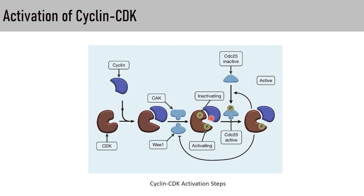This is the point where the cell decides whether to proceed to the next phase or not. CDC25 removes the inhibitory phosphate added by Wee1, so that the cell progresses to the next phase. The activation of cyclin-dependent kinase is regulated by a positive feedback mechanism: CDC25 is more active when there is more activation of the CDK-cyclin complex, and activated CDK-cyclin also inhibits Wee1, reinforcing the switch to the active state.